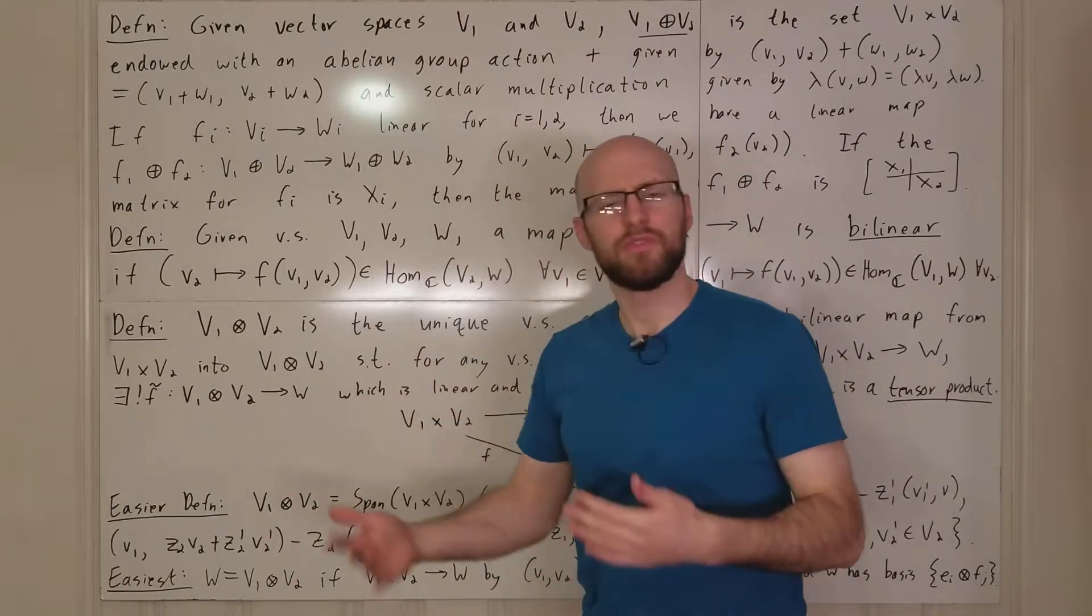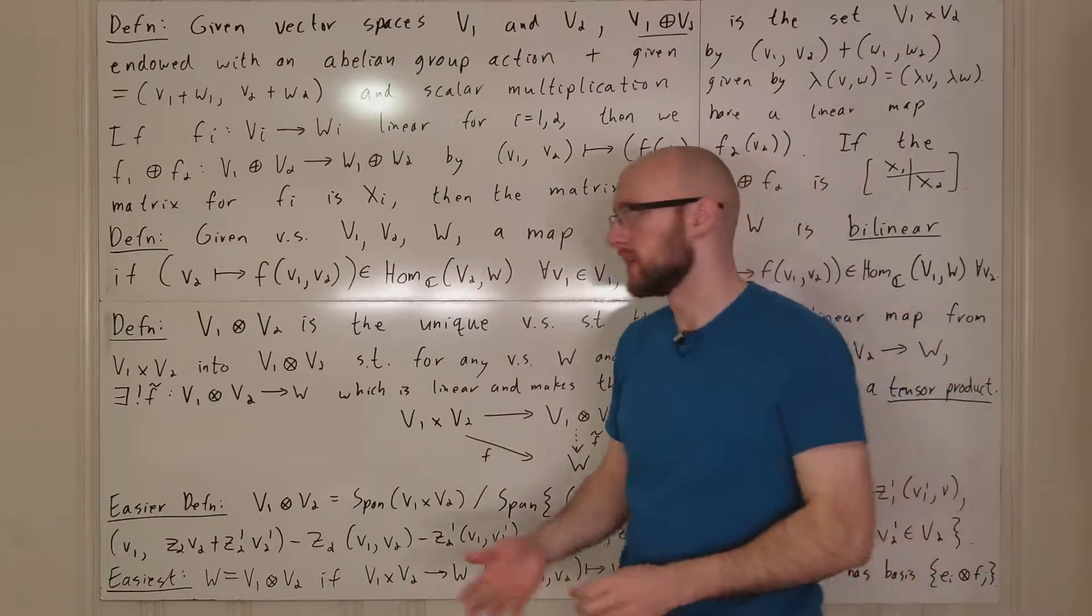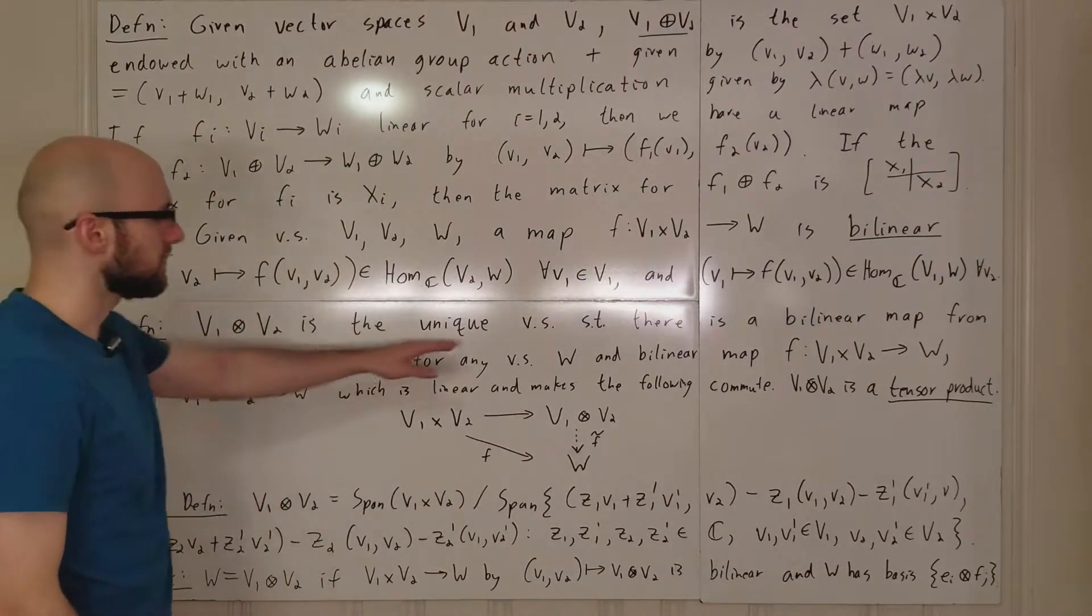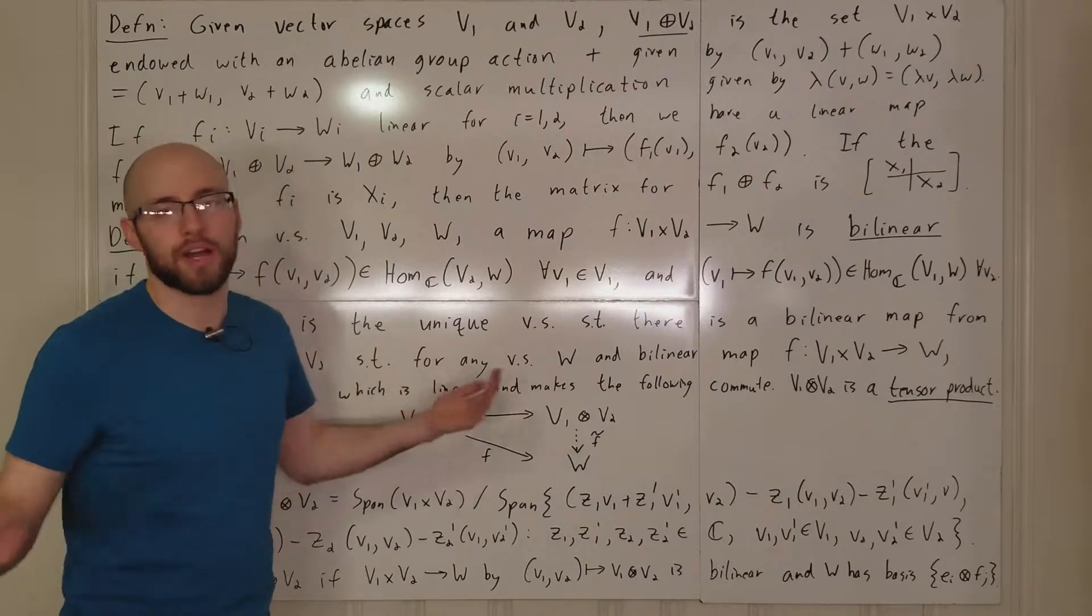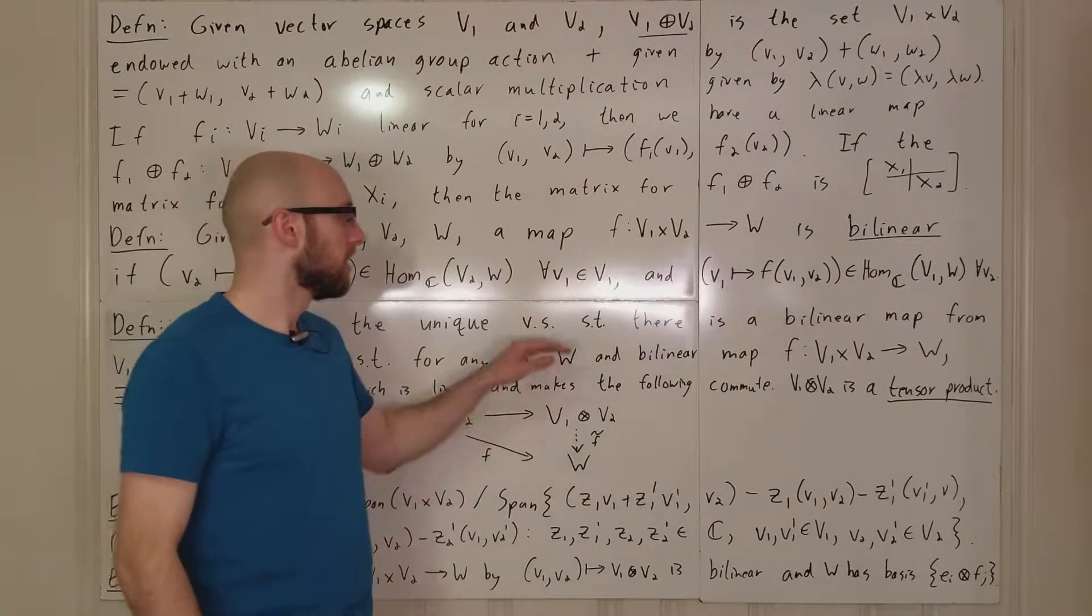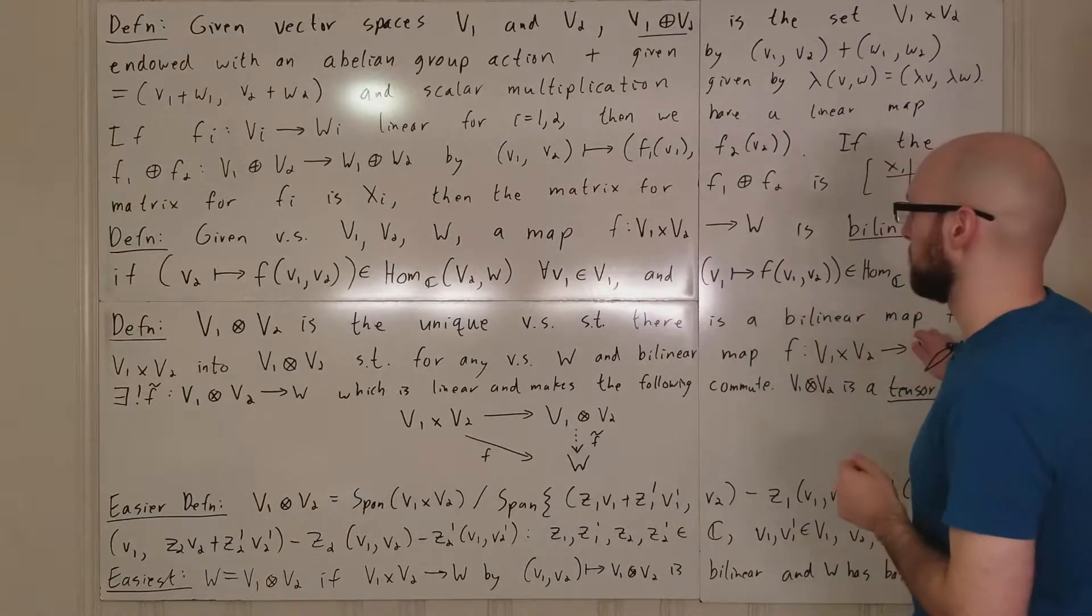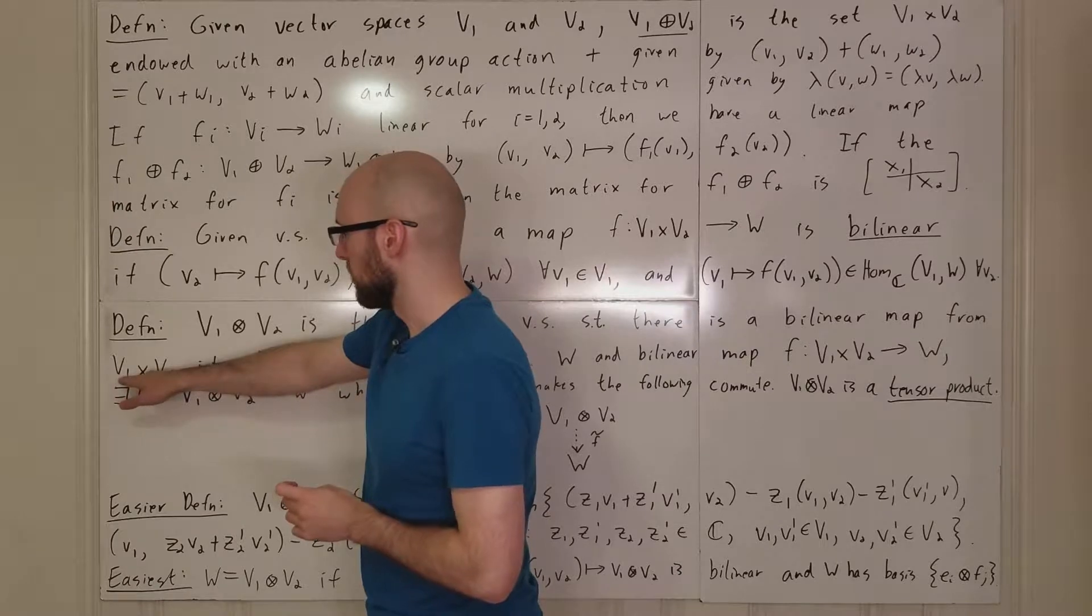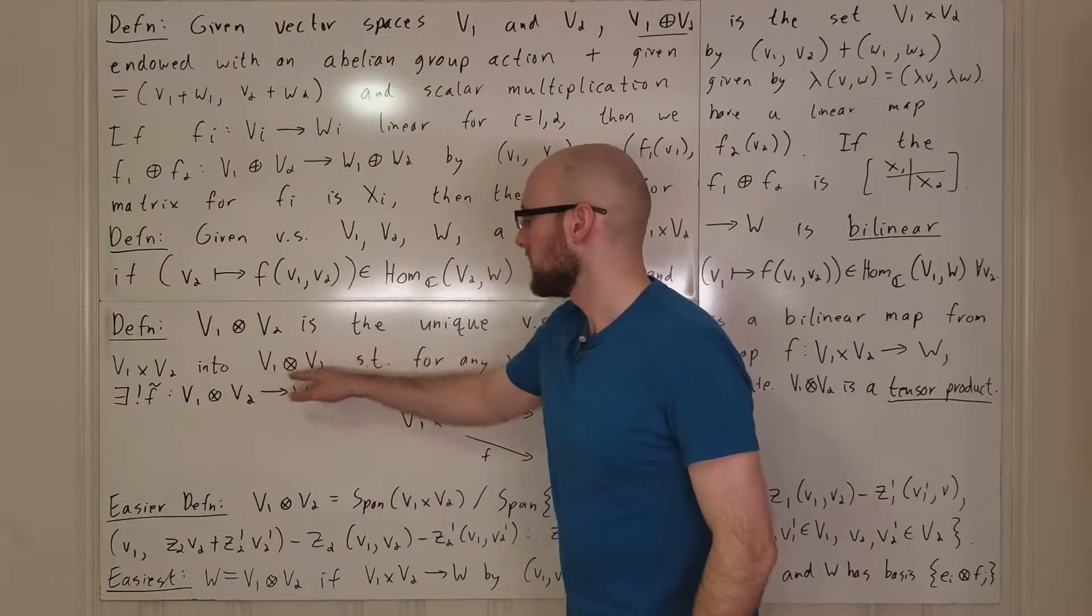Anyways, I'm going to give this definition. There's some statements in here that I'm not currently able to prove, but we're just going to have to take them as fact for now. So what this is, is it's the unique vector space. You would have to prove uniqueness. I don't know how to present a proof of that. Such that there is a bilinear map,